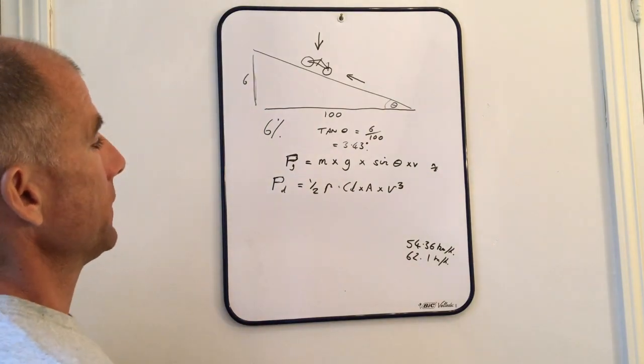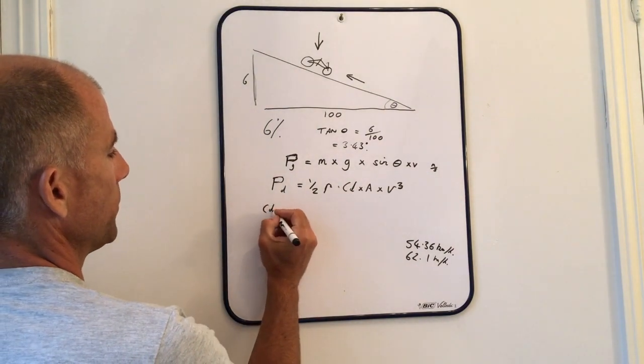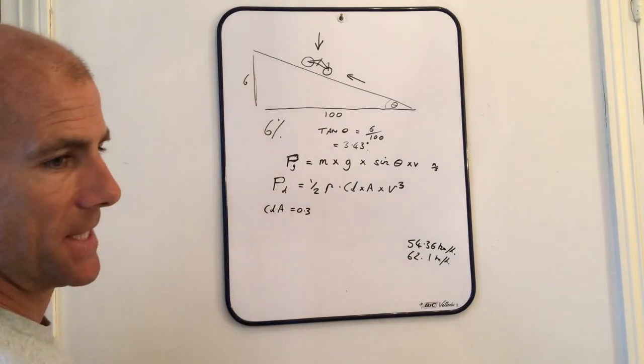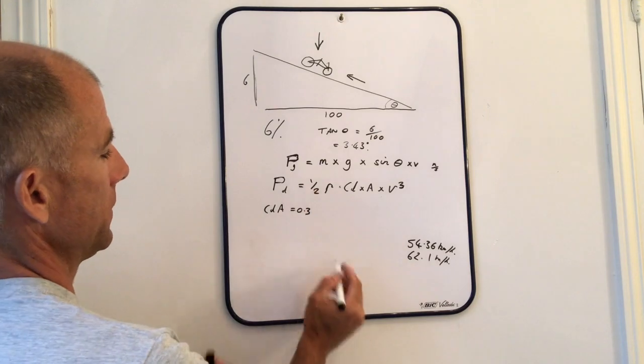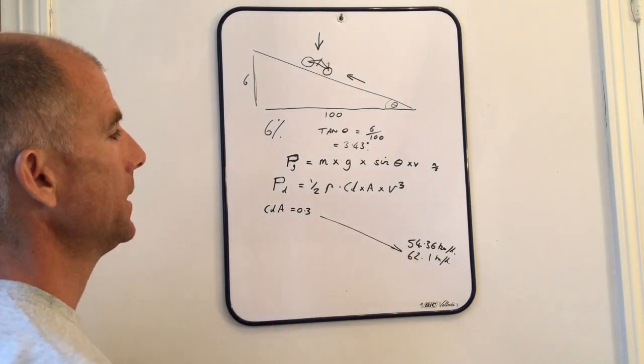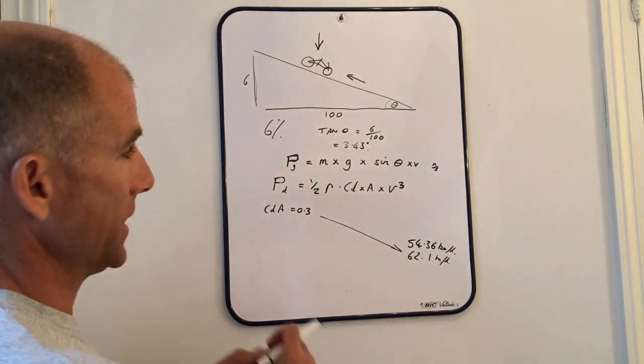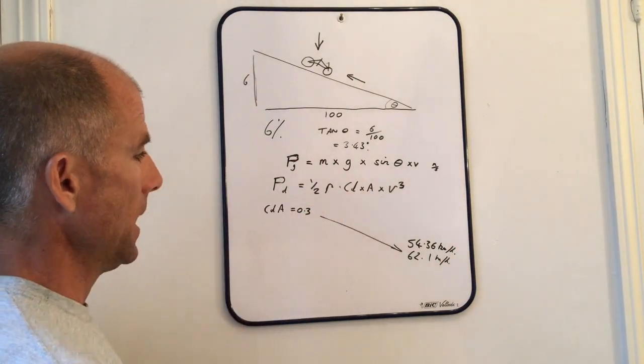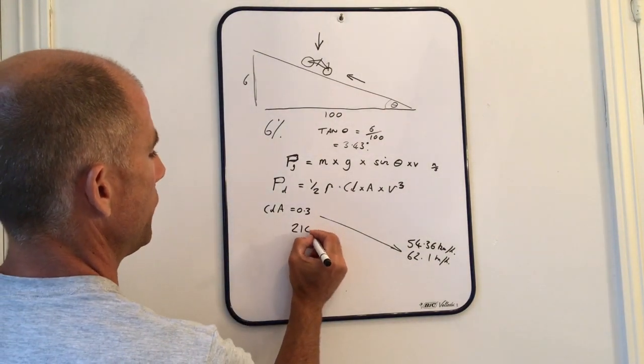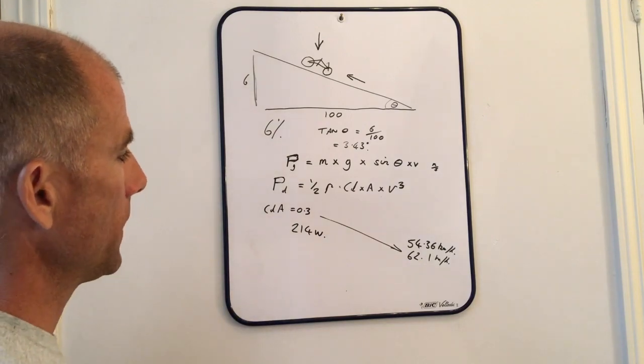Plugging the various figures in, the rider just in the drops with his CDA of 0.3, how much power does he have to add to achieve the same speed as the guy in the super aero tuck? Well, if you plug in all these figures, and again, using the spreadsheet that I've created, just using these formulas here, the answer is 214 watts, which is not insignificant.